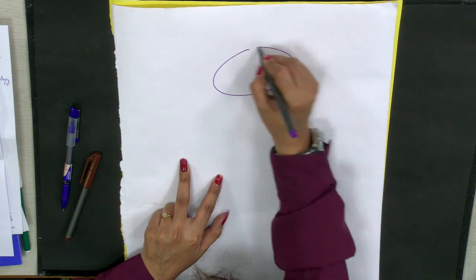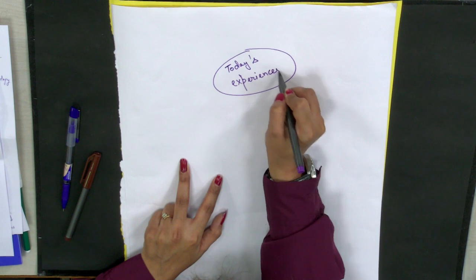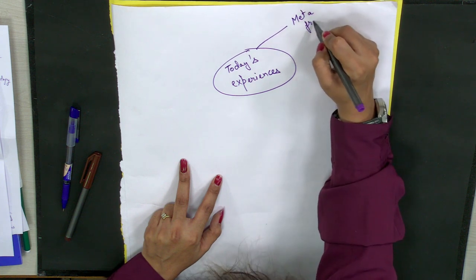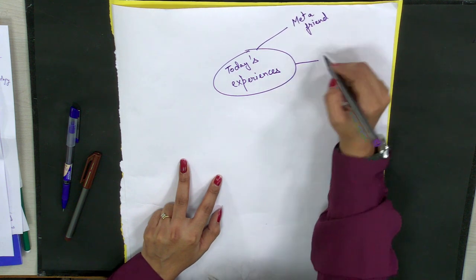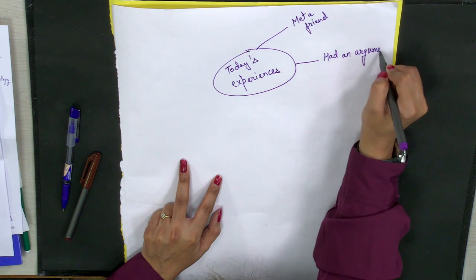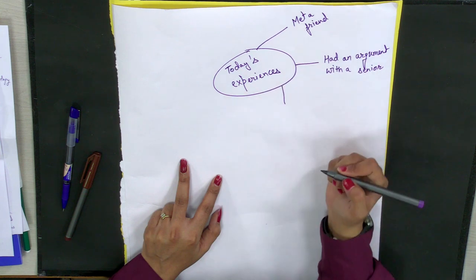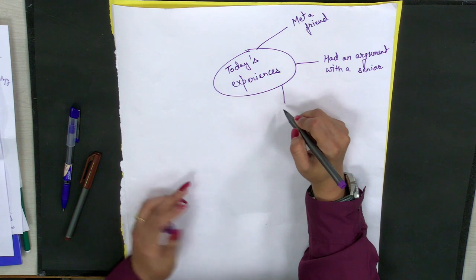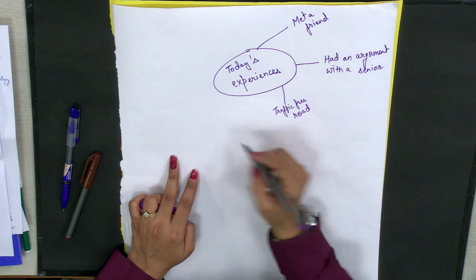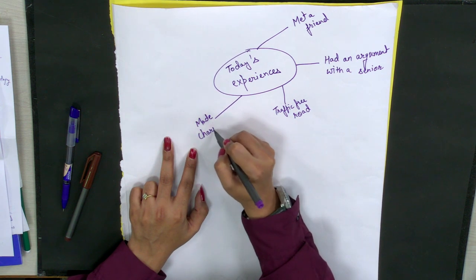Today's experiences: I met a friend. Then I had a fight — an argument — with a senior. There was no traffic, which is a big thing if you're in a big city — a traffic-free road. And then I made some charity — donated money, some medicines. Then I had a birthday lunch with a friend. On a single day you had a lot of events, so you can write a lot of things. Think of how was your mood — it was mixed: when I met a friend I was happy, jubilant, and when I quarreled with a senior, a little angry.